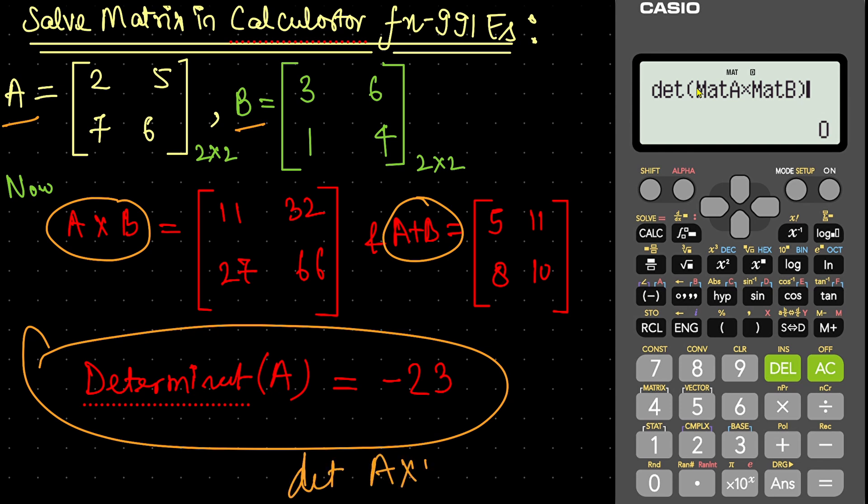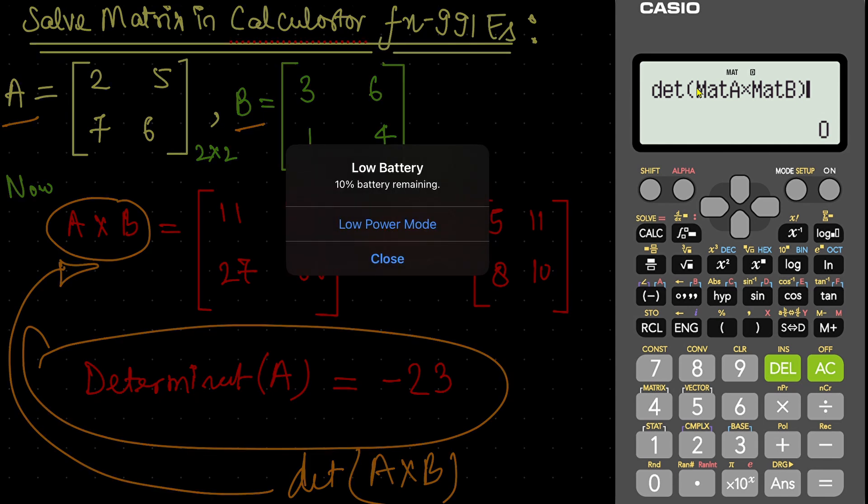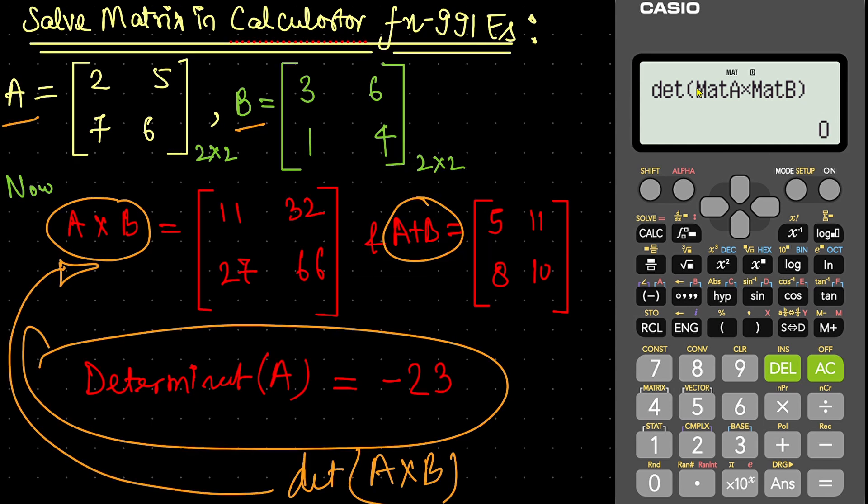Understood? Determinant of A into B. Just like the determinant of this matrix. Now, press calculate and it has calculated. Here it is. Thank you very much and please subscribe.